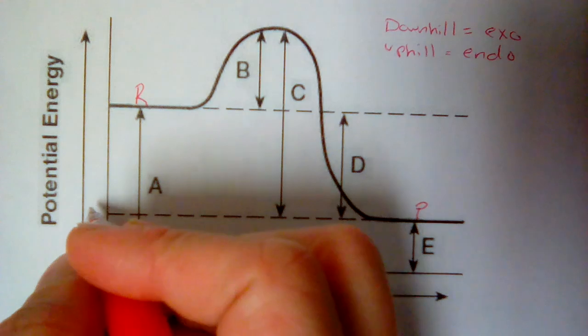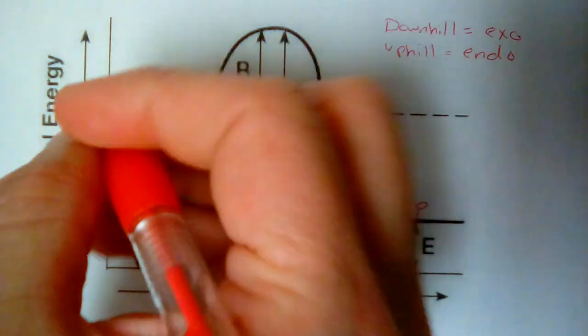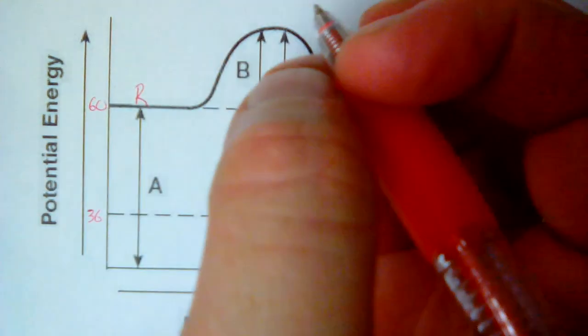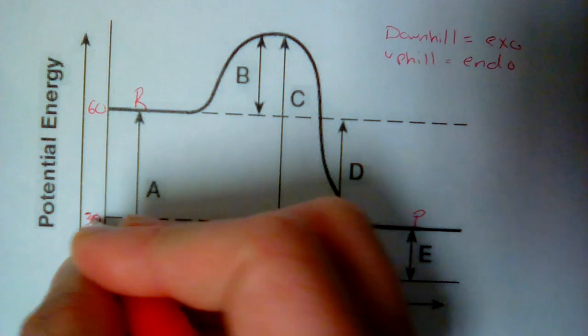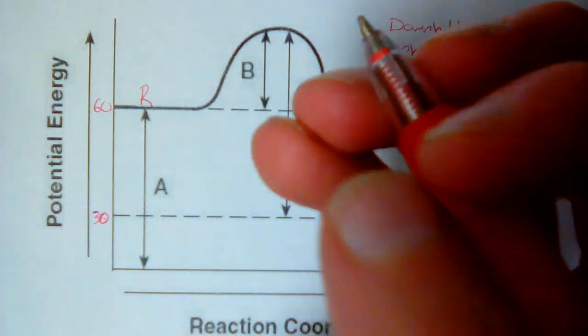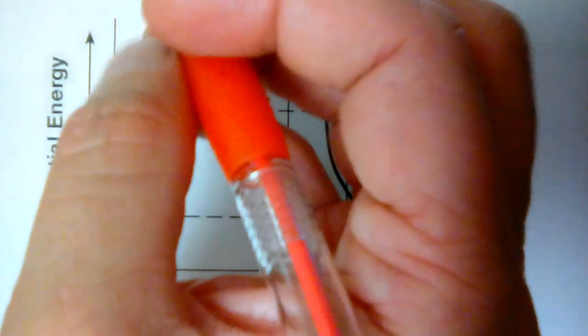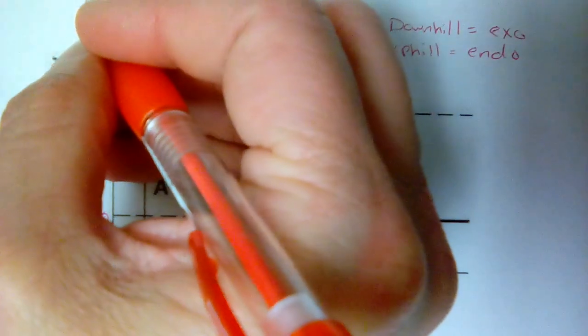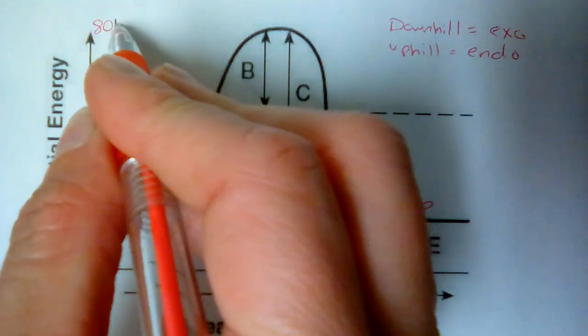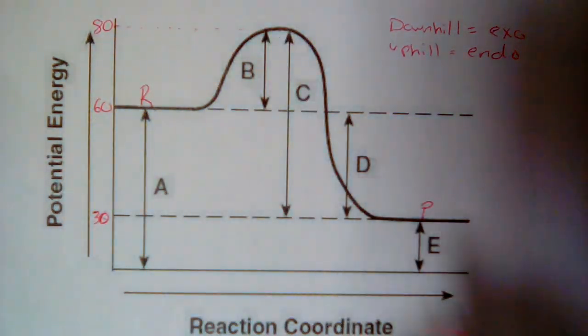The next thing you'd have to be able to do is be able to figure out the energy of your reactants to products, what the actual values of those energies are. I'm just going to throw some numbers on here for the sake of working with the graph, being able to get some actual numbers off of it.